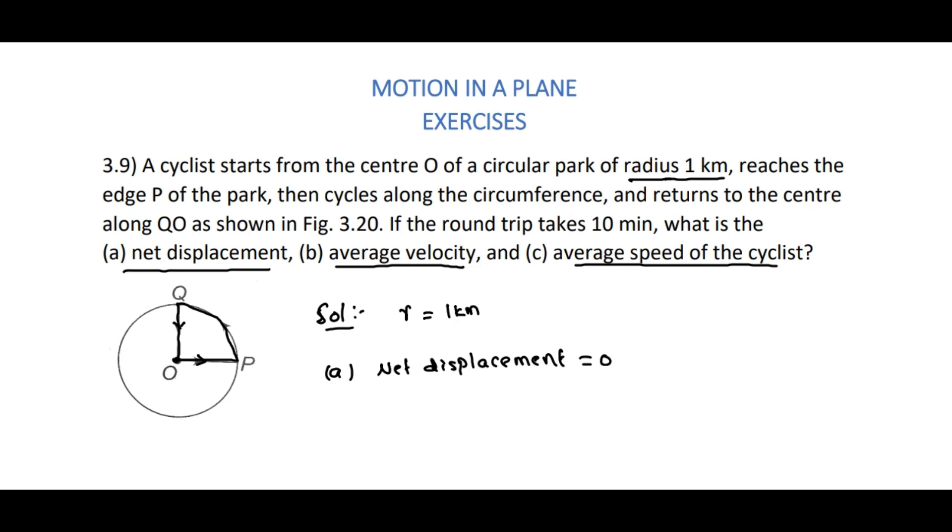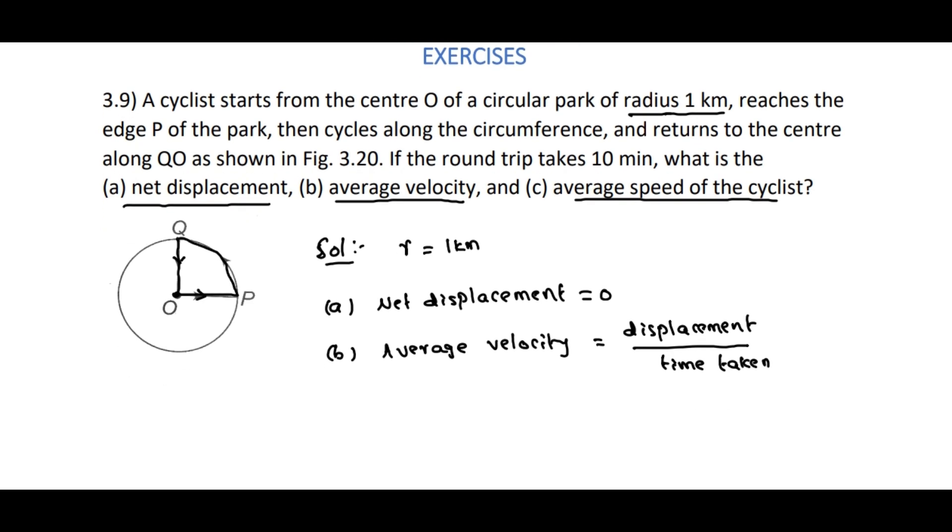While coming to B, the average velocity, so average velocity is equal to displacement divided by time taken. Here the displacement is 0, and time taken is 10 minutes. That one also we can write in terms of hours, 1/6 hour. So divided by 1/6 hour, that is nothing but 0.